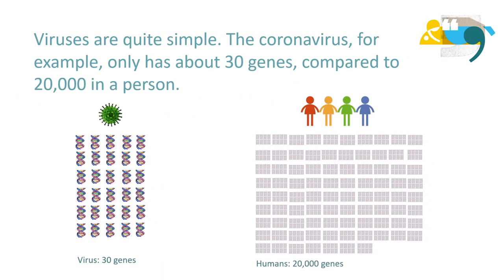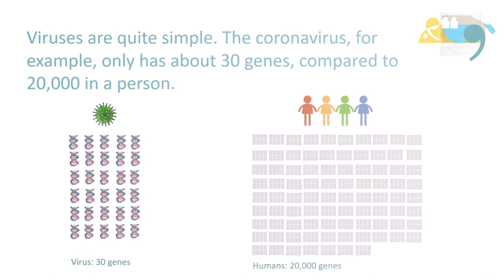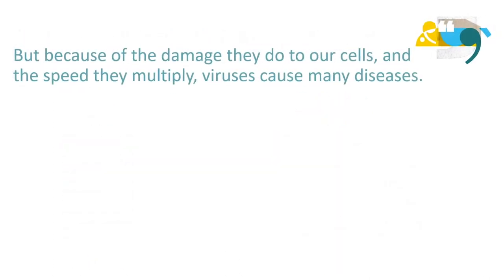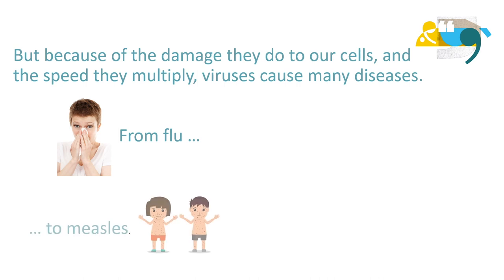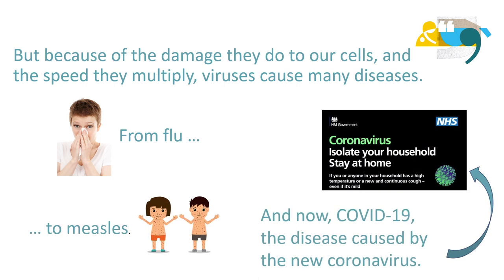Viruses are quite simple. The coronavirus, for example, only has about 30 genes, compared to 20,000 in a person. But because of the damage they do to our cells and the speed they multiply, viruses cause many diseases, from flu to measles, and now COVID-19, the disease caused by the new coronavirus.